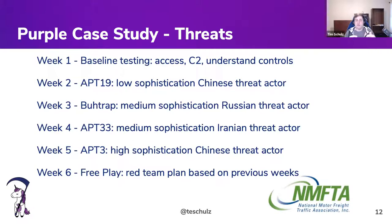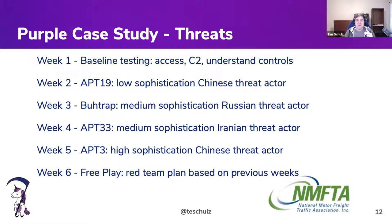We used cyber threat intelligence research to outline four specific adversaries with different levels of sophistication and execution methods, so we could continue to measure the maturity of the organization as we were building defenses. The first week was just baseline testing to see where we were starting, because measuring is a really important part of purple teaming. As we went through each week, we tested again and again, built new detections, but each new week tried something a little different — to see whether detections were overly specific to the previous test or whether they'd work against a new adversary.